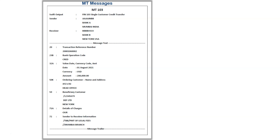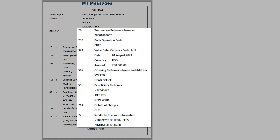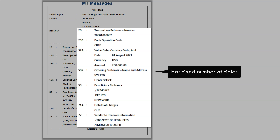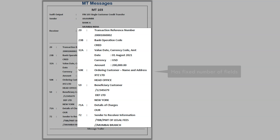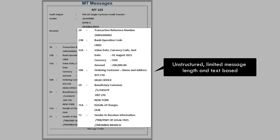What is the main reason for replacing MT messages with ISO 20022 MX messages? The main hindrance of the current MT messages is the rigidity of how the messages are structured. Each message type has a fixed number of fields — you cannot add a new field or alter the structure if such a need arises. These messages are unstructured, have limited message length, and are text-based.